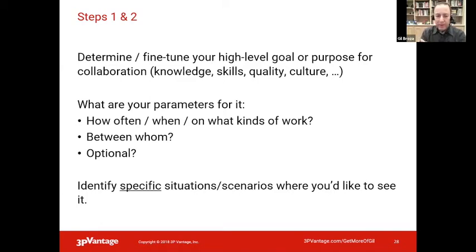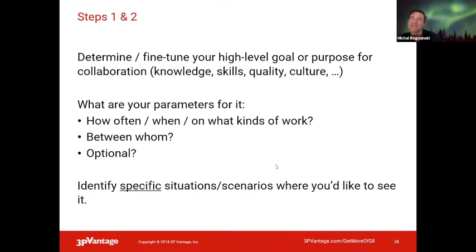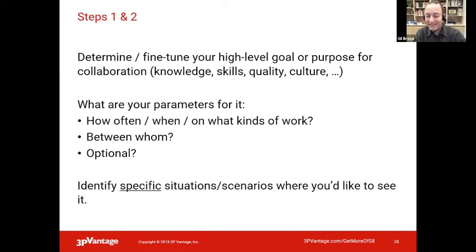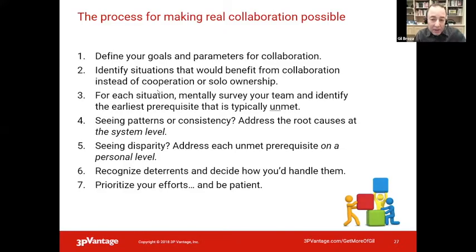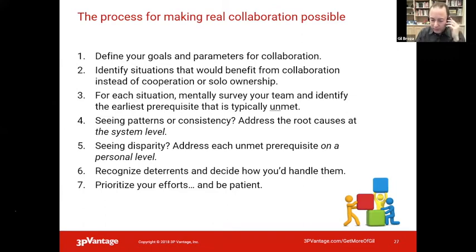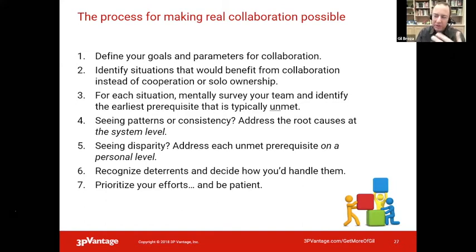Step two is to identify specific situations where you'd like to see collaboration. I asked you earlier to pick an example you'd work with — you can use the same example now. We'll put you in breakout rooms so you can fine-tune your choices. Then when I take you through steps three, four, and five, you can do the mental work with a specific example and specific outcomes. When you do this type of mental assessment and are seeing patterns or consistency, you have a system issue to address.